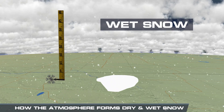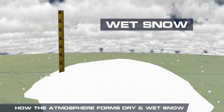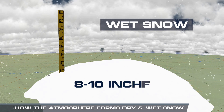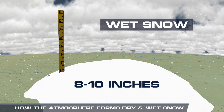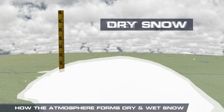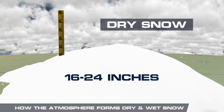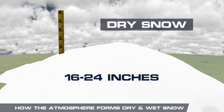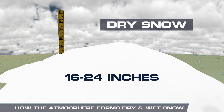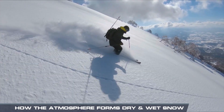Say one inch of liquid water fell as heavy, wet snow — this would produce around 8 to 10 inches of accumulation. But a dry snow could pile up to double or triple that accumulation from this same amount of liquid.